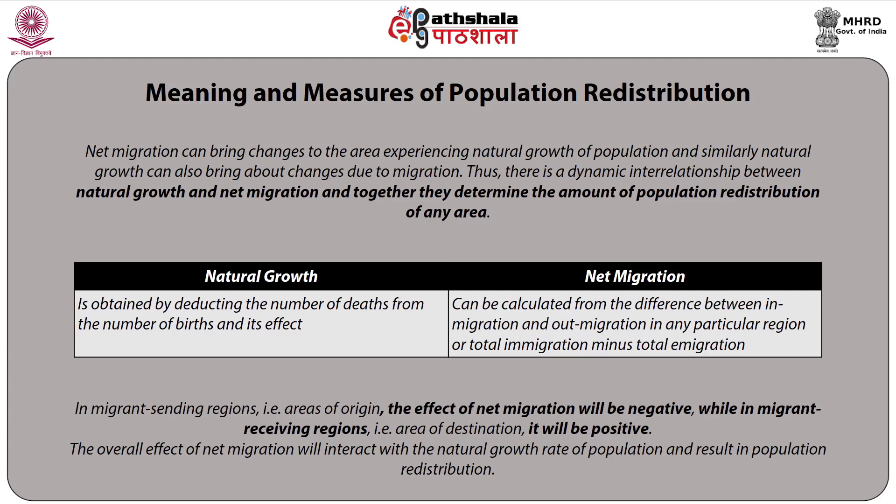Whether positive or negative, the effect of natural growth will depend on the stage of demographic transition the region is experiencing. Net migration can be calculated from the difference between in-migration and out-migration, or total immigration minus total emigration. In migrant-sending regions (areas of origin), the effect of net migration will be negative, while in migrant-receiving regions (areas of destination) it will be positive. The overall effect of net migration will interact with the natural growth rate and result in population redistribution.